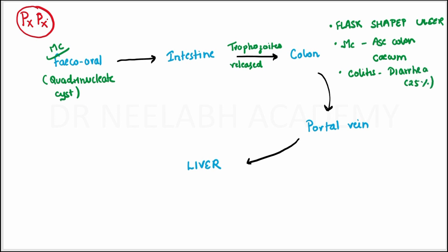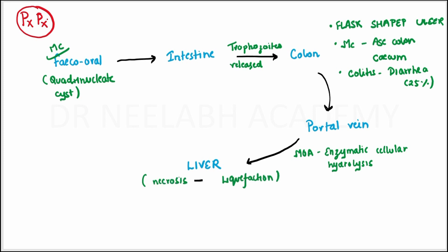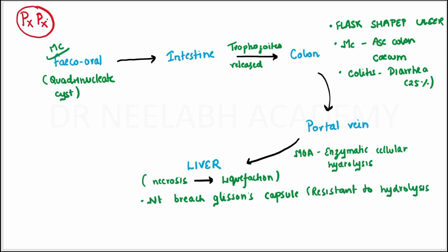The mechanism of action in the liver is basically enzymatic cellular hydrolysis, by which necrosis takes place in liver tissues, leading to liquefaction of liver tissues. This pus does not invade the Glisson's capsule because it is hydrolysis resistant. This liquefaction forms anchovy sauce pus.